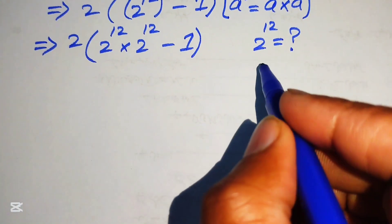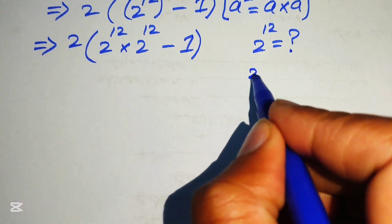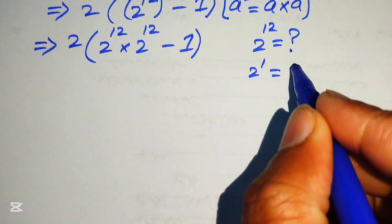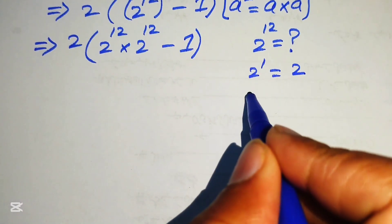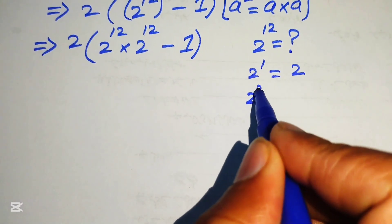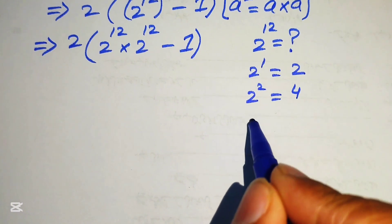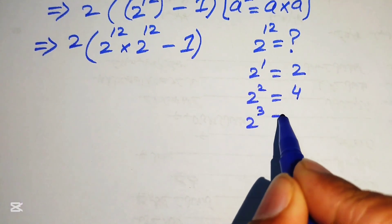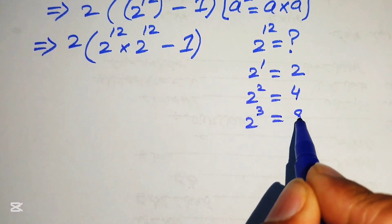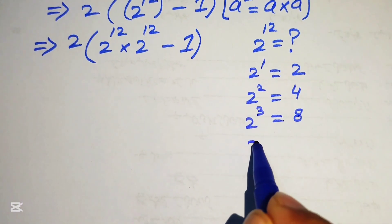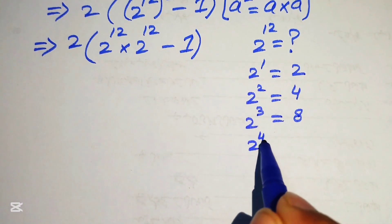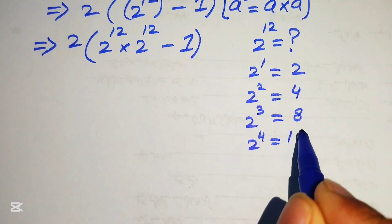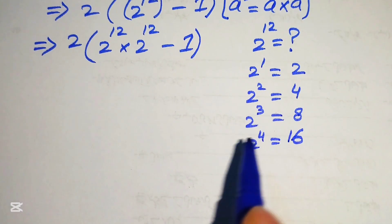You know that 2 to the power of 2 equals 4, 2 to the power of 3 equals 8, and 2 to the power of 4 equals 16.